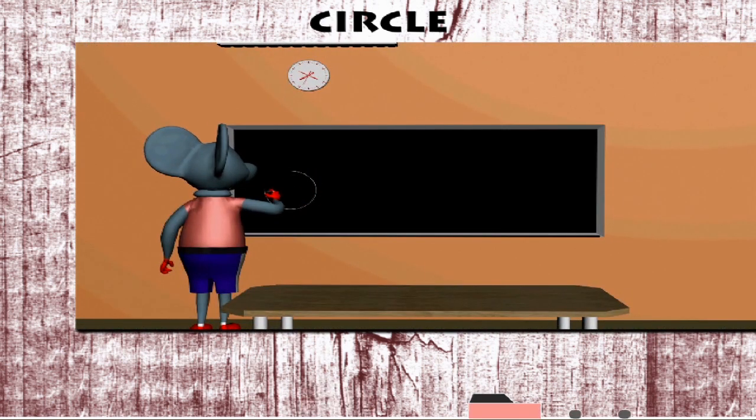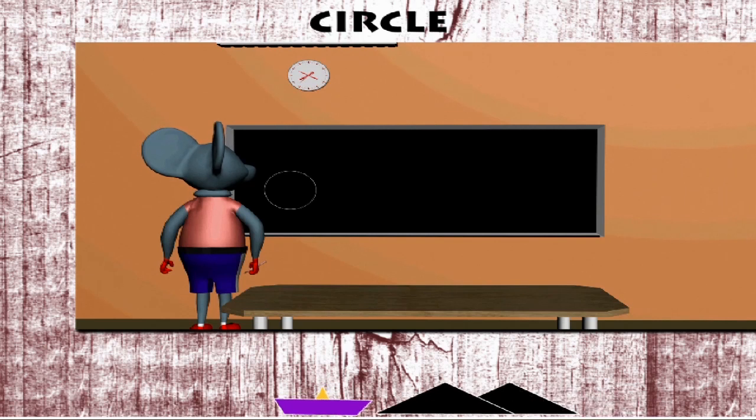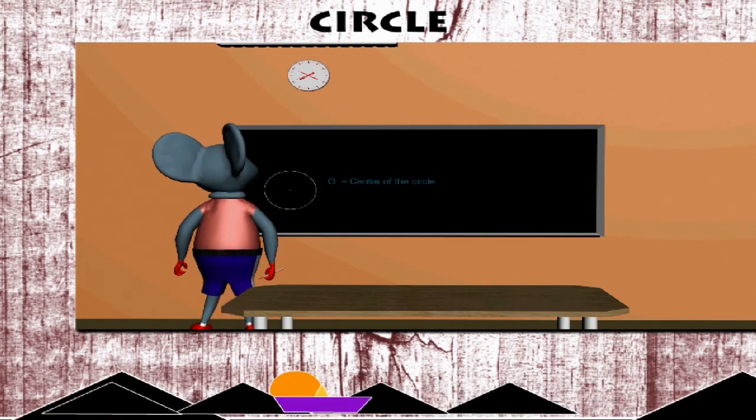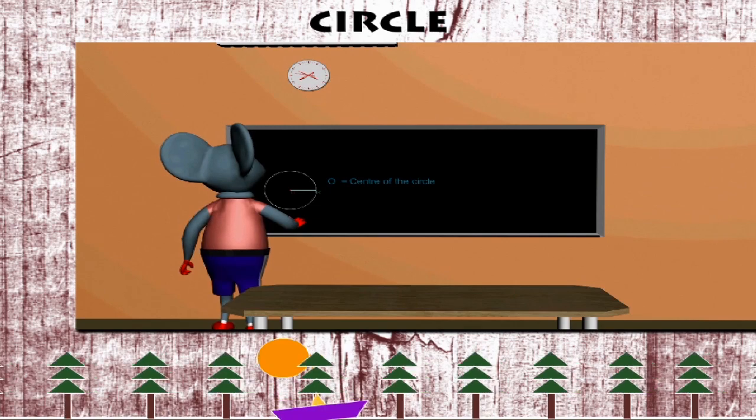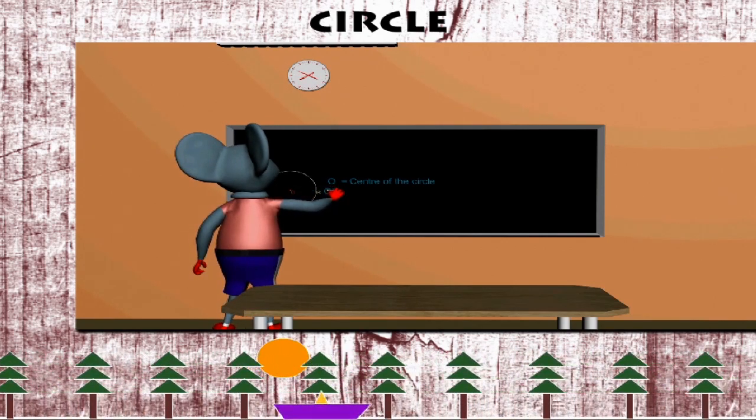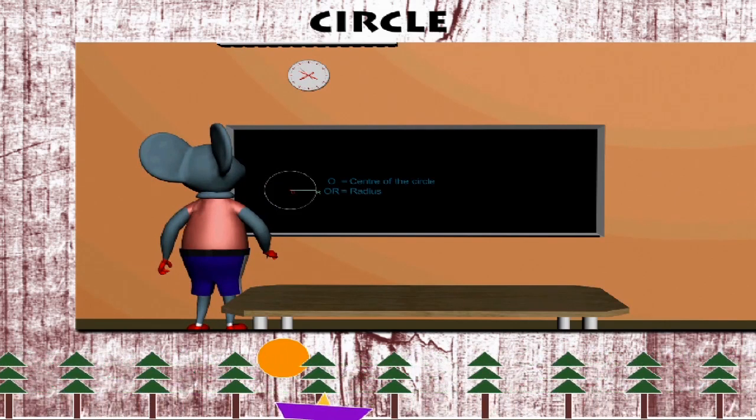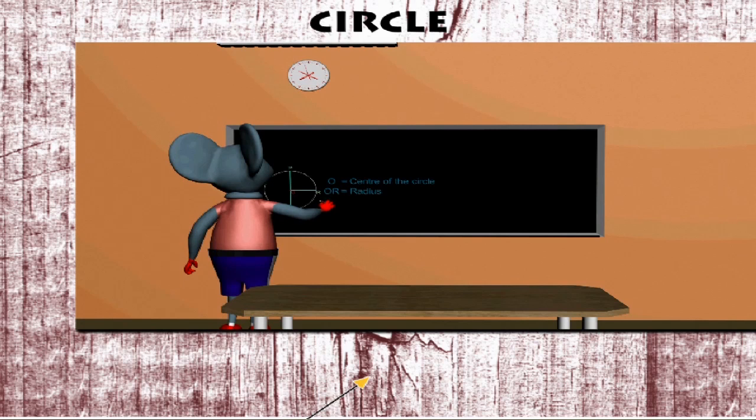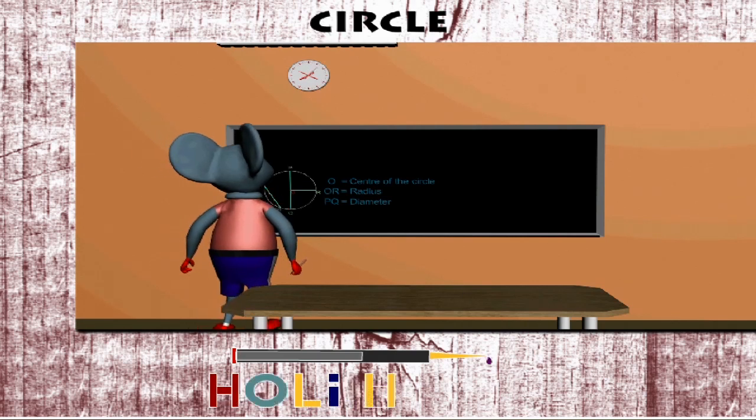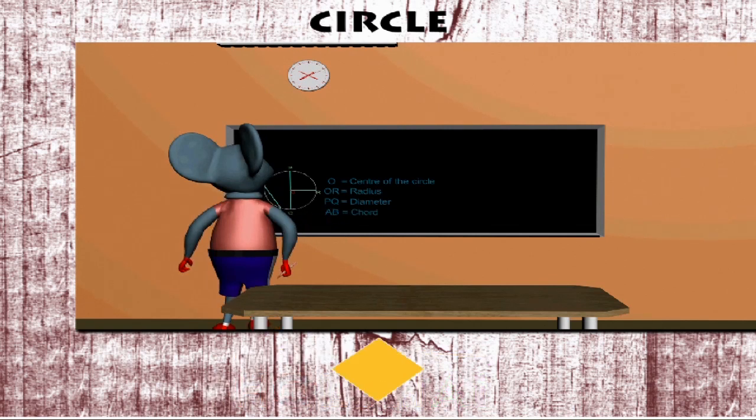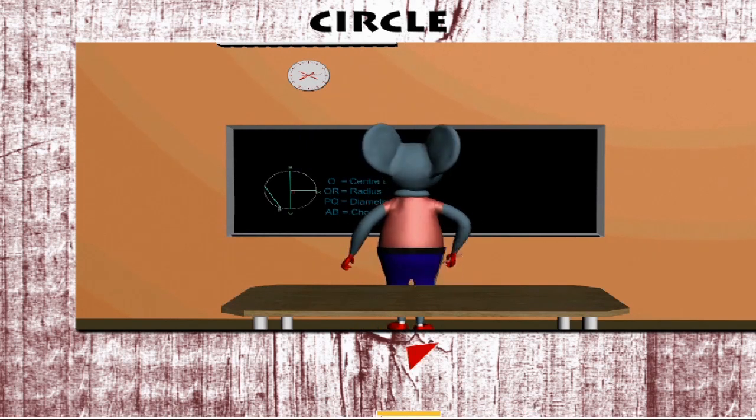Circle. Robbie Mouse draws a perfect circle on the board. He marks O as the center of the circle. He draws a line connecting the center with the curved outline of the circle and marks it OR called radius. Robbie draws a line across the circle passing through the center and labels it diameter. Finally, he draws a line to the side connecting the curved outline but not passing through the center as AB. He labels it chord.